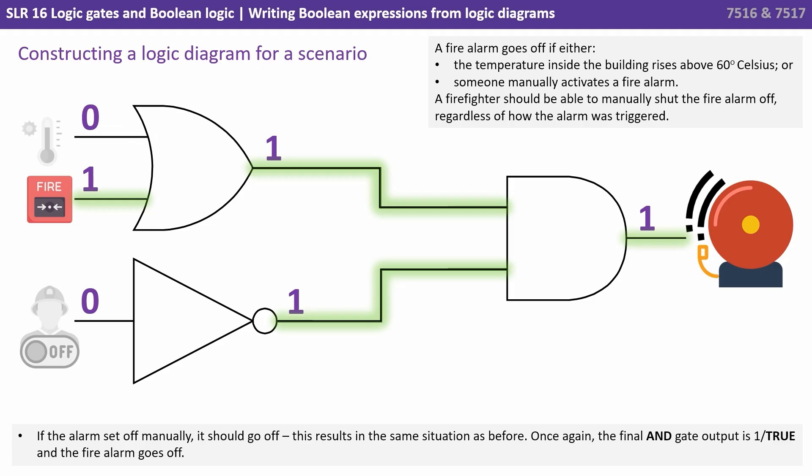If the alarm is set off manually it should also go off and this results in the same situation as before. Once again, the final AND gate is now receiving two ones and so the output is one and thus the alarm goes off.